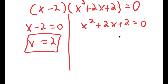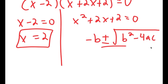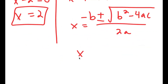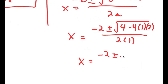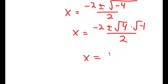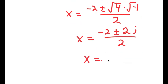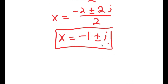For x squared plus 2x plus 2 equals 0, we use the quadratic formula: negative b plus or minus the square root of b squared minus 4ac, all over 2a. So x equals negative 2 plus or minus the square root of 4 minus 4 times 1 times 2, all over 2. This gives negative 2 plus or minus the square root of negative 4, over 2, which equals negative 2 plus or minus 2i, over 2, which simplifies to negative 1 plus or minus i. So the three solutions are x equals 2, x equals negative 1 plus i, and x equals negative 1 minus i.